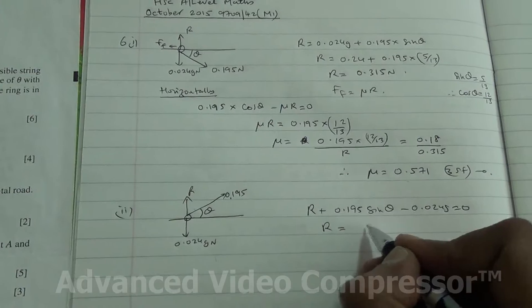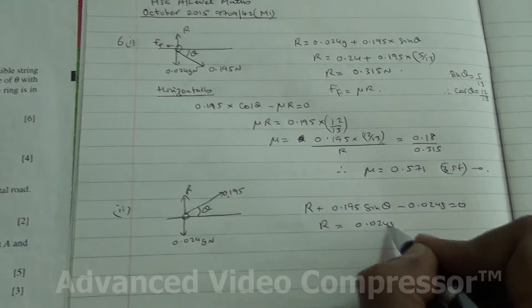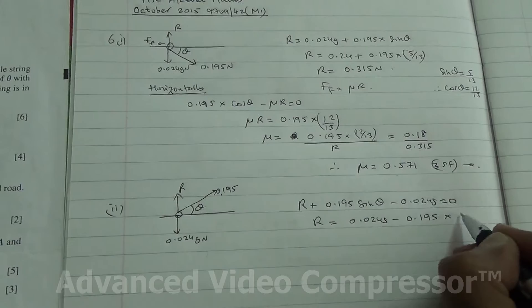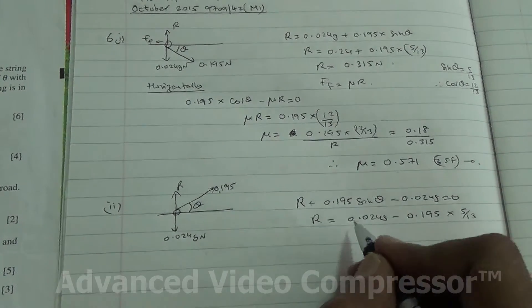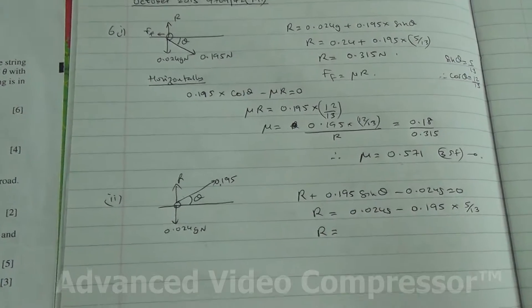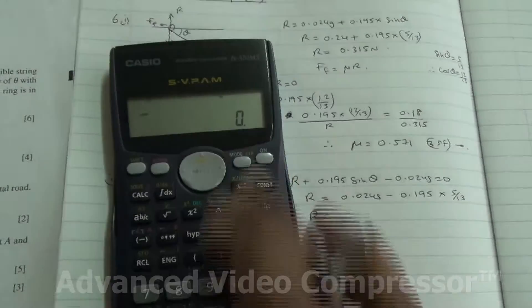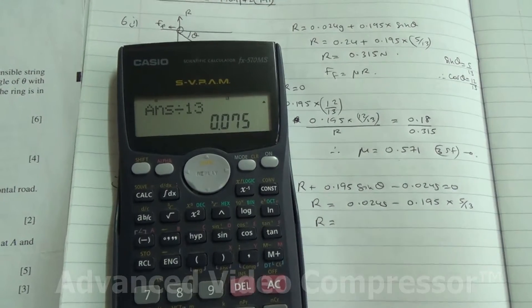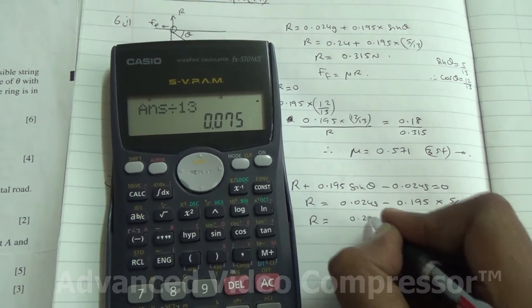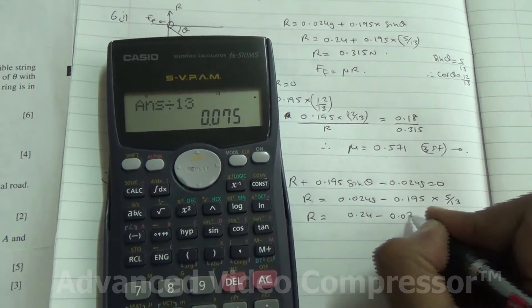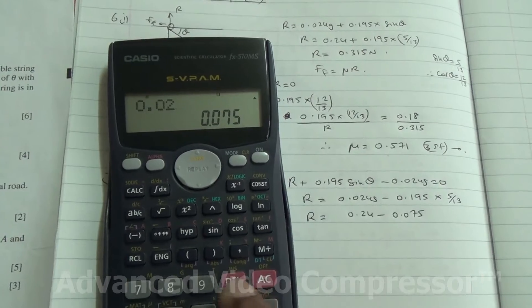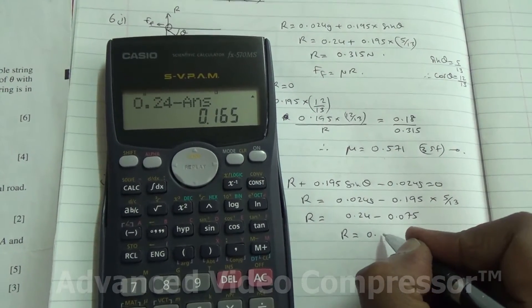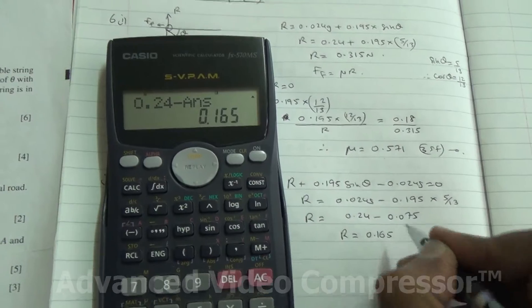So R is going to be, this can go on the other side, 0.024 g minus 0.195 times the sine of theta, 5 over 13. Okay, so all of that is going to be equal to R. Therefore, R is going to be, let's do it in our calculator, and g is 10, so this is going to be 0.24 minus 0.075. And therefore, the contact, I mean sorry, R is going to be 0.165 newton.